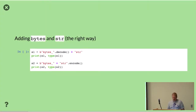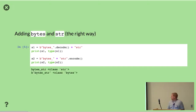The right way to combine a byte string and a Unicode string is to either decode the byte string into Unicode and then add it to the Unicode string, or to encode the Unicode string as bytes and then add it to a byte string. You get the same sequence of characters, but in one case it's a byte string and in the other case it's a Unicode string.